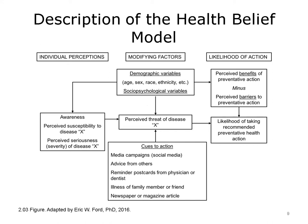The other important parts of the health belief model fall under likelihood of action on the right-hand side of the chart. This involves decision-making: looking at perceived benefits and subtracting the barriers to action — a cost-benefit analysis. It involves deciding whether doing what needs to happen to improve health is worth the cost, such as whether it's worth getting up every morning to go to the gym and pay gym fees to lower my risk of cardiovascular disease. These factors — overall perception of threat coupled with the cost-benefit analysis — determine the likelihood of taking action.